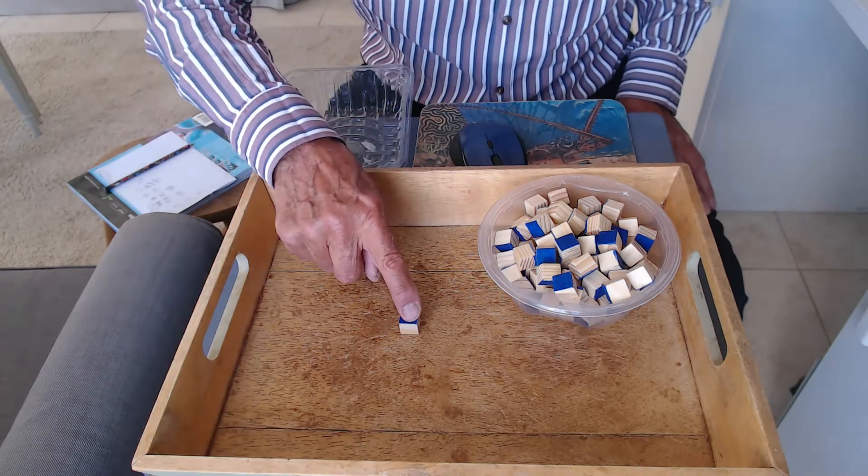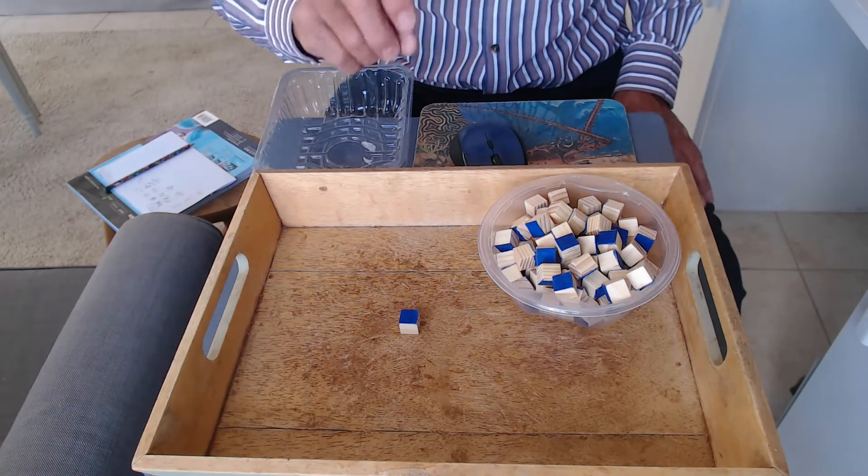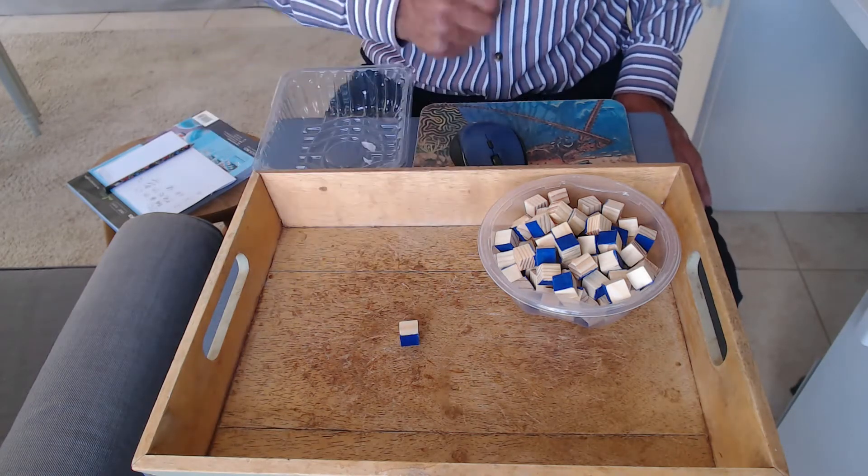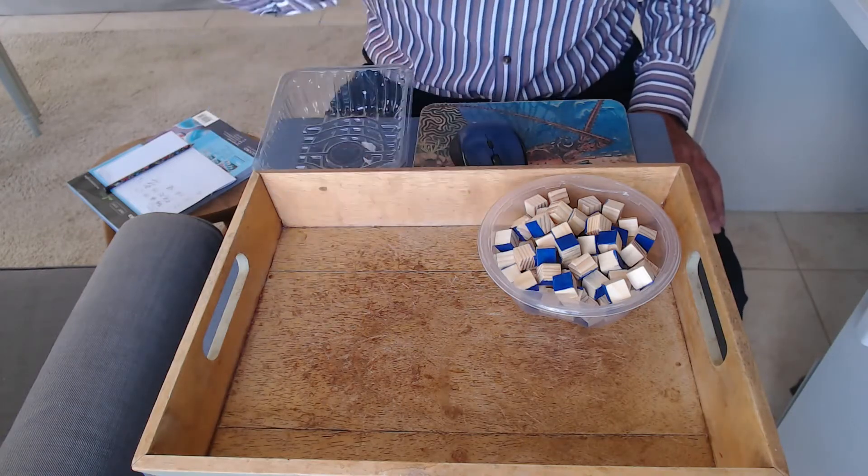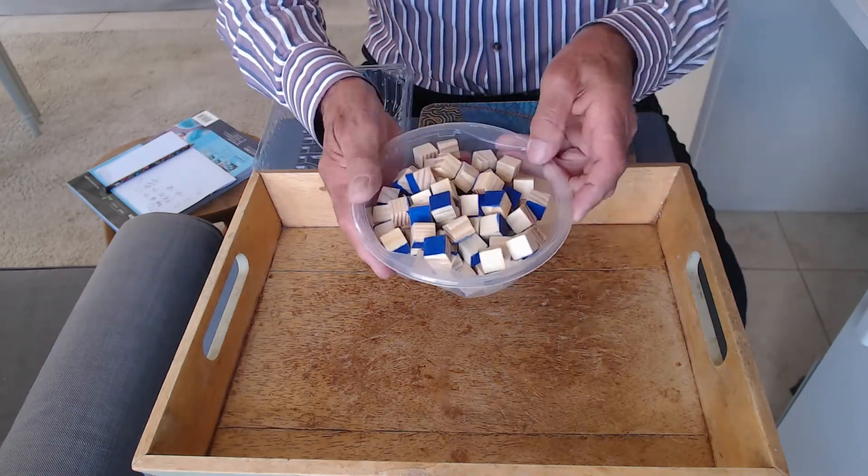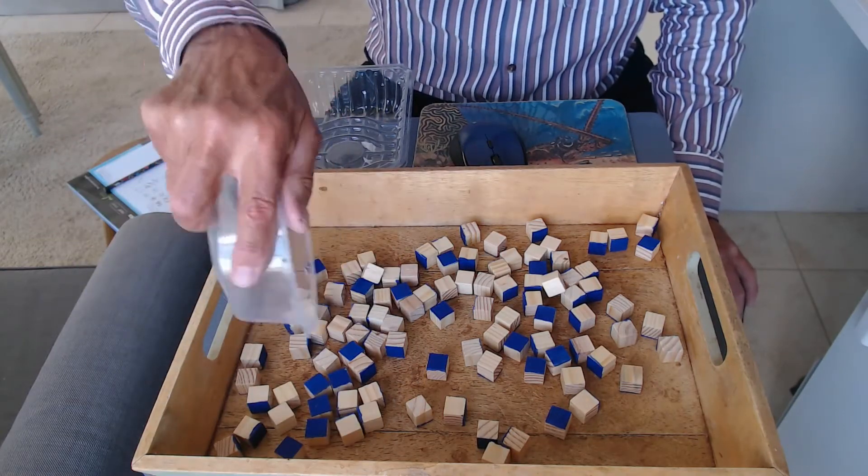Each block represents one nucleus. If the blue face lands uppermost, this represents a nucleus that has decayed. If it lands like this, it represents a nucleus that hasn't decayed. We'll start with our hundred blocks.